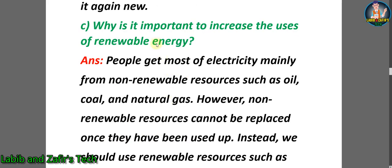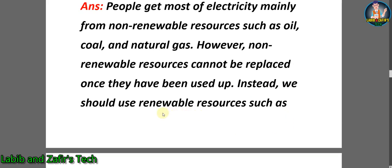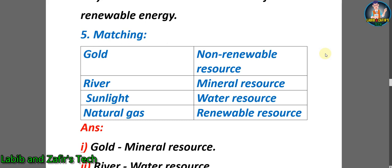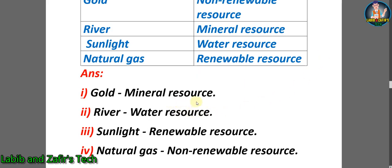c) Why is it important to increase the use of renewable energy? Answer: People get most of their electricity from non-renewable resources such as oil, coal, and natural gas. However, non-renewable resources cannot be replaced once they have been used up. Instead, we should use renewable resources such as sunlight, wind, and water current. That's why we need to increase the use of renewable energy. Now the matching answers: gold — mineral resource; river — water resource; sunlight — renewable resource; natural gas — non-renewable resource.